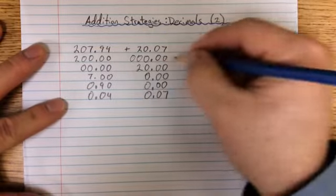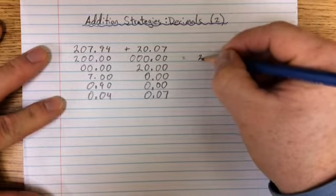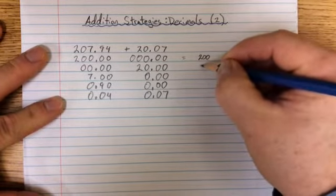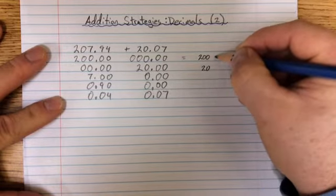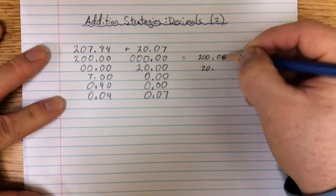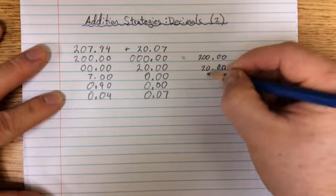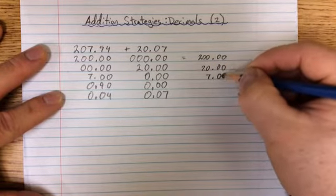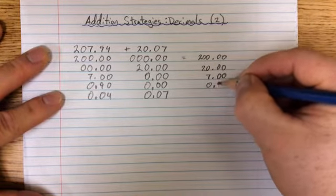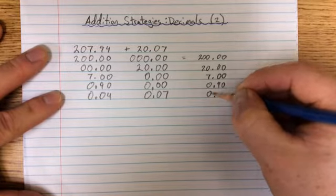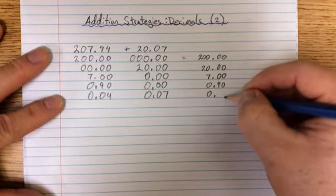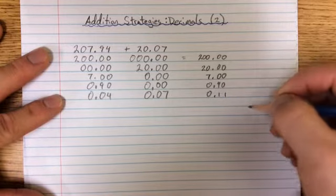And again, so we added across, 200 plus 0 is equal to 200. We have our 20, got to keep my decimals going as well. We have our 7, our 9 tenths, and 11 hundredths, which would be 11 starting in the hundredths place.